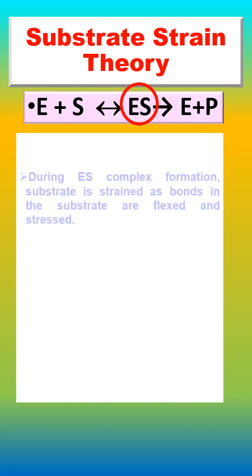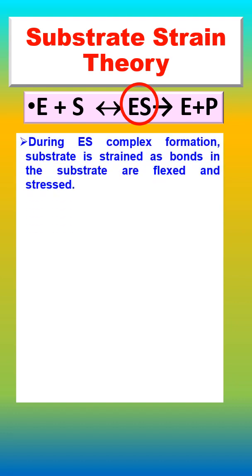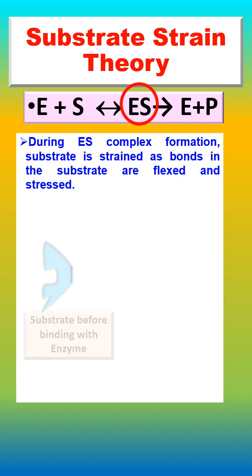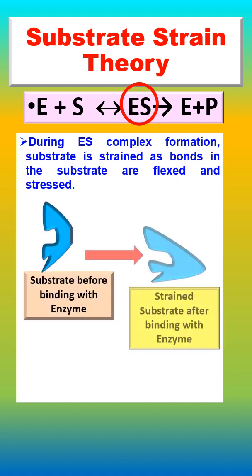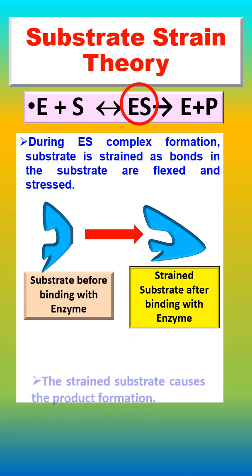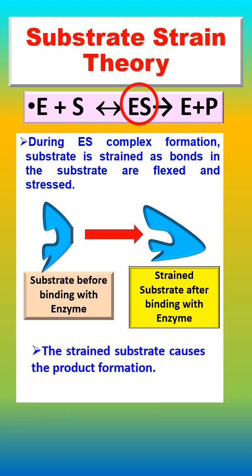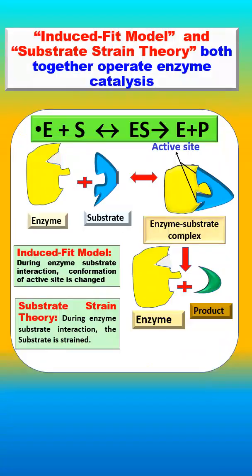According to substrate strain theory, during ES complex formation the substrate is strained. That means bonds in the substrate are flexed and stressed, and the strained substrate causes product formation. The induced fit model and substrate strain theory both together operate in enzyme catalysis.